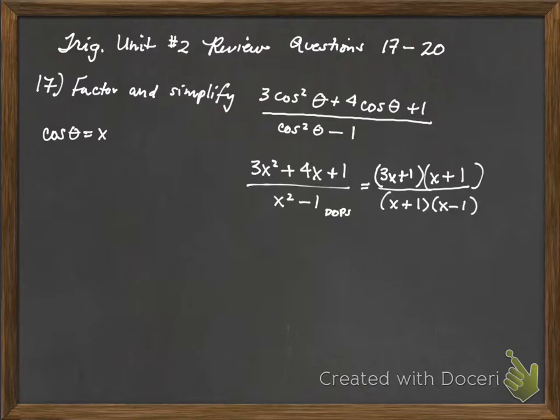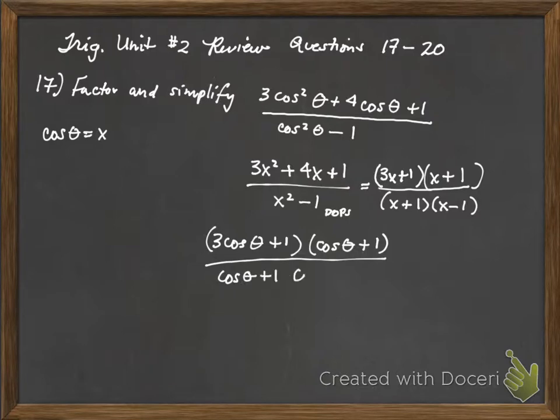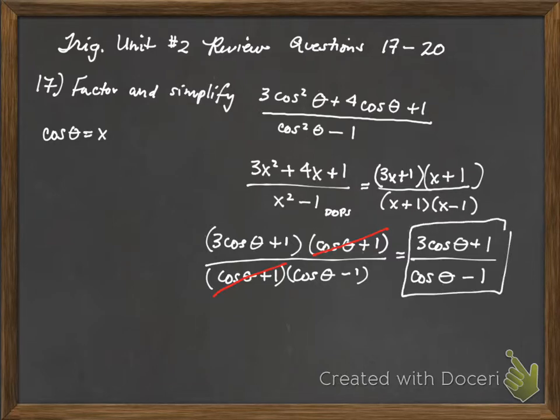We don't want to leave it like that. We have to go ahead now and substitute cosine theta back in. So this says 3 cosine theta plus 1 times cosine theta plus 1 over cosine theta plus 1 cosine theta minus 1. The next step you want to do is see if you can't simplify some of these binomials. Since cosine theta plus 1 is exactly the same thing in the numerator and the denominator, I can cancel it out. And I'm left with 3 cosine theta plus 1 over cosine theta minus 1. And that is the answer for number 17.